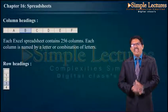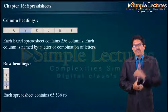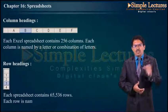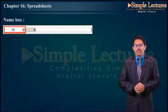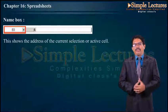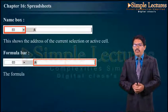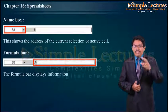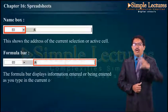Name box: This shows the address of the current selection or active cell. Formula bar: The formula bar displays the information entered or being entered as you type in the current or active cell. The contents of a cell can be edited in the formula bar.